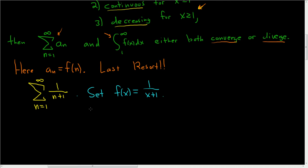It's obvious that f is continuous for x greater than or equal to 1. The only place f is not continuous is negative 1, but we care about x's that are greater than or equal to 1. F is positive for x greater than or equal to 1. If x is a number bigger than or equal to 1, we're taking x and adding 1 to it, so we get a positive number. A positive number divided by a positive number is still a positive number.